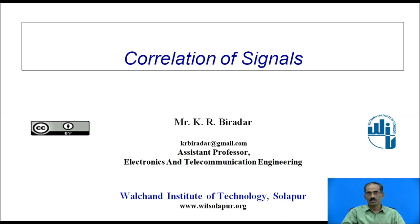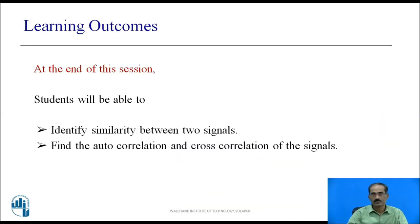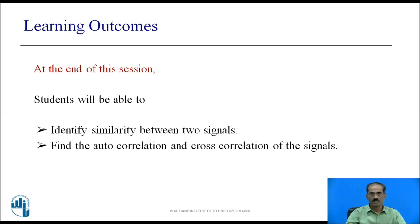Today I am going to discuss the topic called correlation of signals. Let us start with the learning outcomes first. At the end of this session, students will be able to identify similarity between two signals, and find the autocorrelation and cross-correlation of signals.